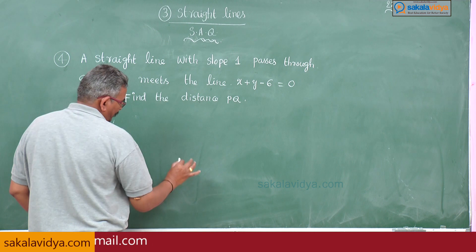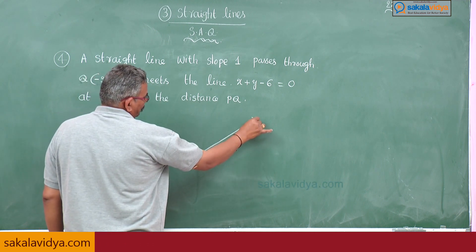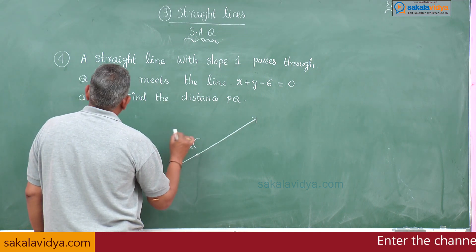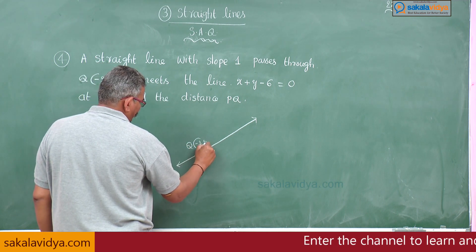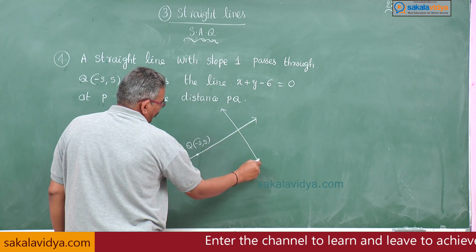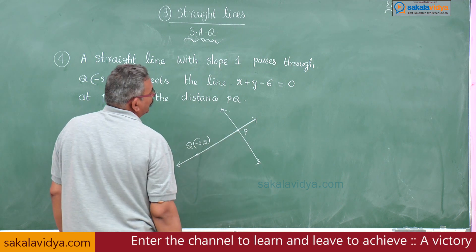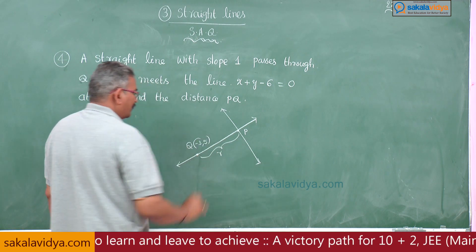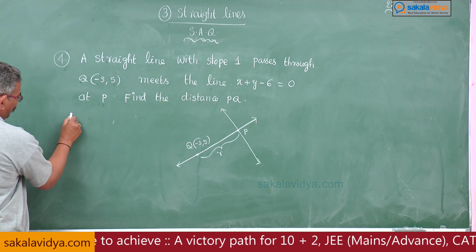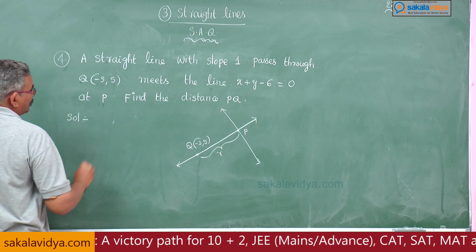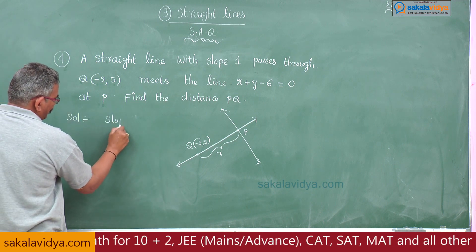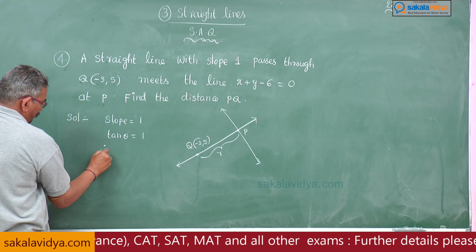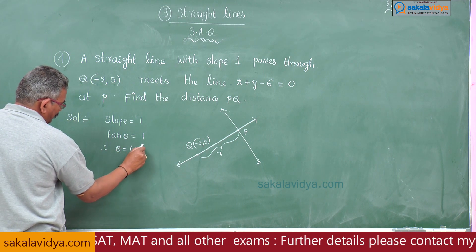This line passes through the Q point, which is minus 3 comma 5, and meets another line at P — we do not know the P point. The distance between P and Q, let us say r, is the value we have to evaluate. So, for the solution: slope equals 1, that means tan theta equals 1, therefore theta equals 45 degrees or pi by 4.